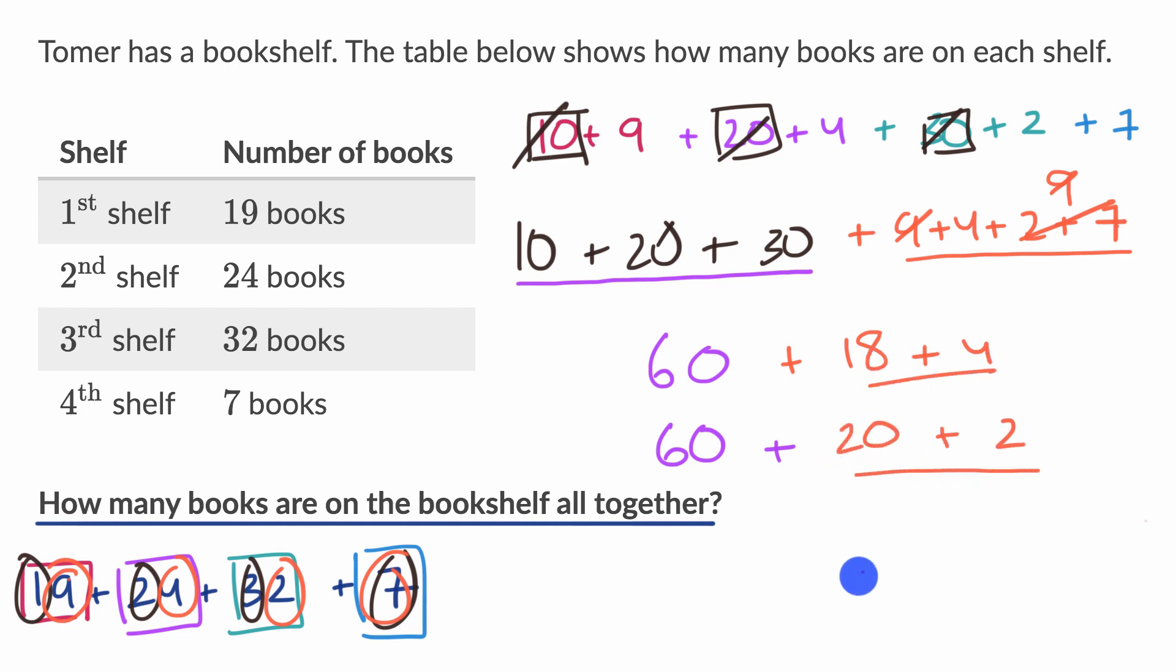This and this are equivalent. And the reason why I did that is it's easy now to add 20 to 60. That's two tens plus six tens. That's going to give us eight tens. That's going to be 80. And then 80 plus two is of course going to give us, and if we can have something of a drum roll, almost have the answer, 82. That's how many books Tomer has all together.